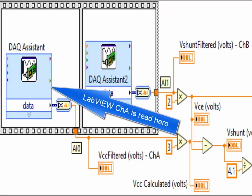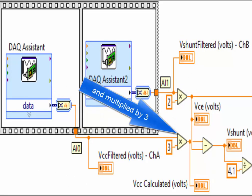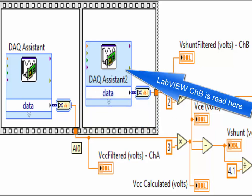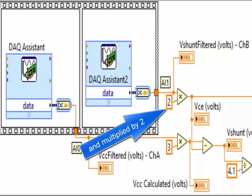Channel A is read here and multiplied by three. Channel B is read here and multiplied by two.